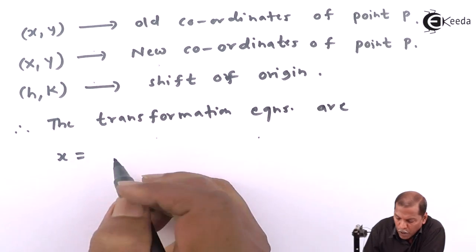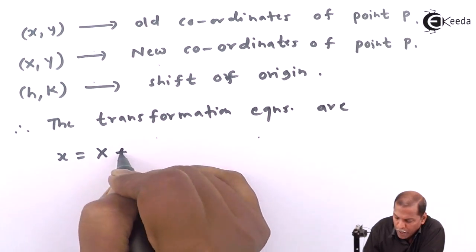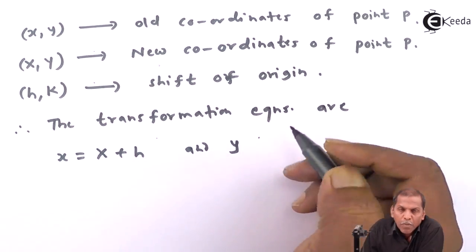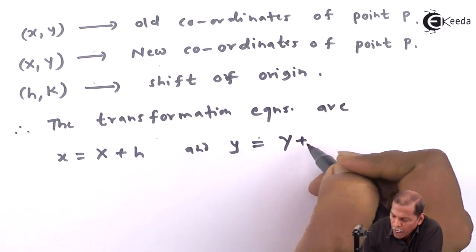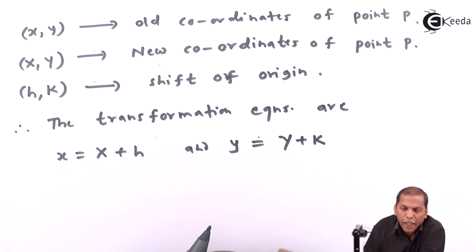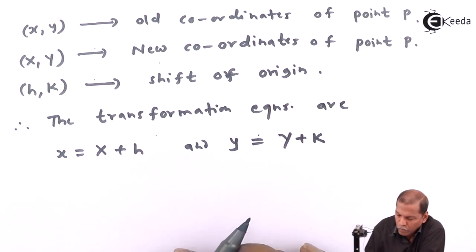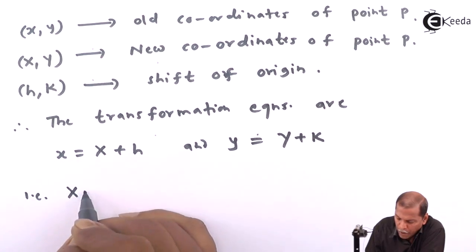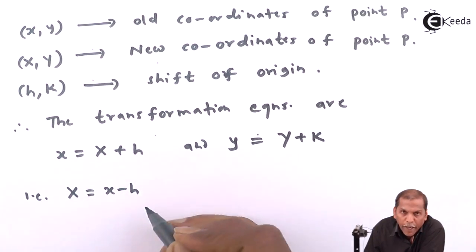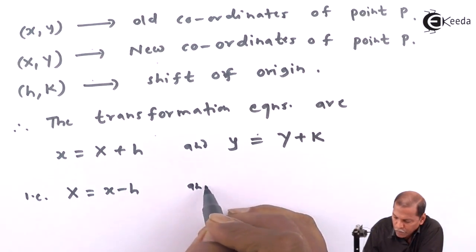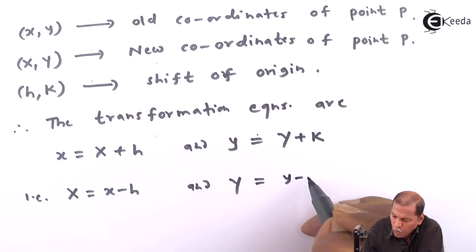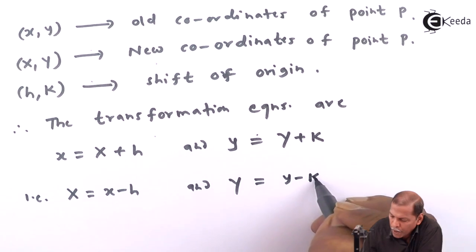x = X + h and y = Y + k. That is, X = x - h and Y = y - k.